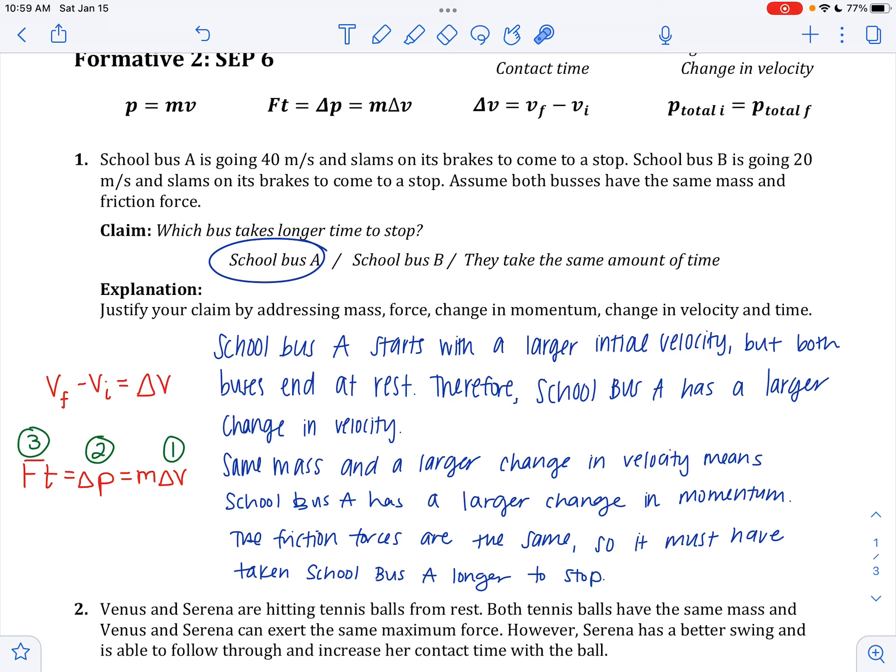That one has a larger change of velocity, and that they have the same mass. And that's going to tell us about the change in momentum. So A has a larger change of momentum. So now we're in the middle part of the equation. And now, if you just said here, and a lot of people do this, a larger change in momentum means more time, that is a sometimes true statement.